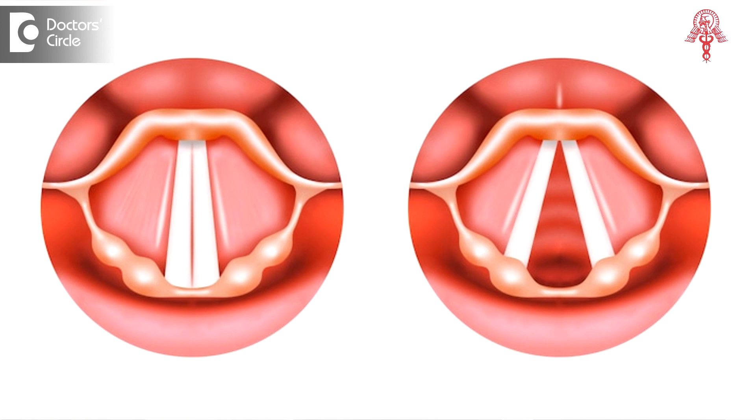The vocal cords have to vibrate freely and be able to vibrate equally on both sides to produce good voice. The sound that is produced will be impaired if there is any impediment to the free vibration of the vocal cord margins. If the vocal cord margins are not free, there will be a qualitative change in the voice, which can show up as hoarseness.